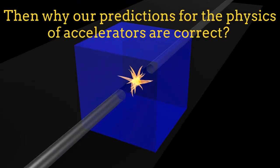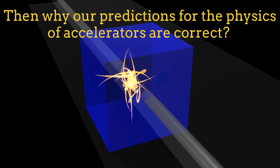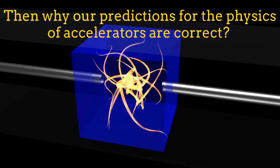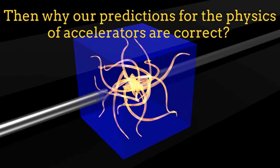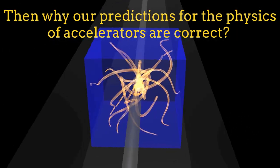Any violation of microcausality means that all the predictions made for particle accelerator experiments would be wrong. Then, what is going on?